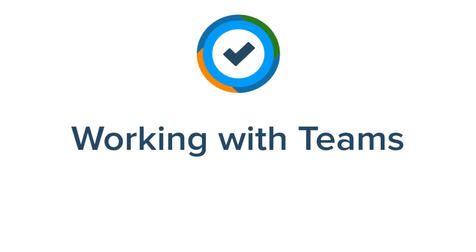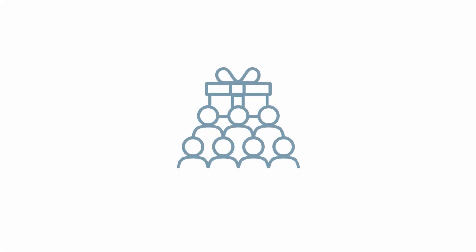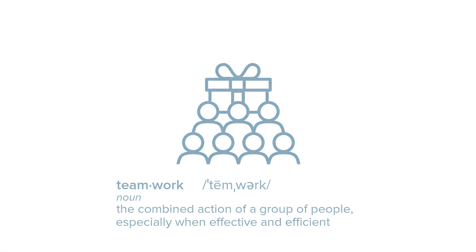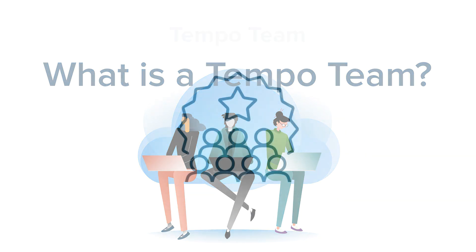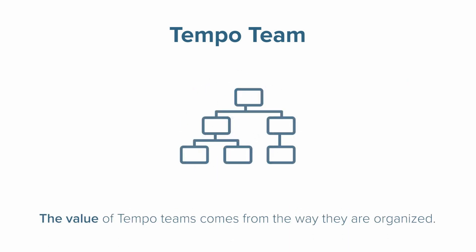Welcome to this introduction to Teams in Tempo Timesheets and Tempo Planner for Jira Cloud. According to the dictionary, teamwork is the combined action of a group of people, especially when it's effective and efficient. In Tempo, teams are a powerful tool that can facilitate teamwork among individuals across your organization. A Tempo team is a group of Jira users who work on projects together in some way, and the value of Tempo teams comes from the way they're organized.